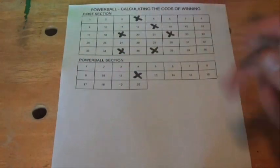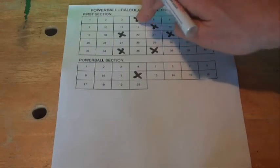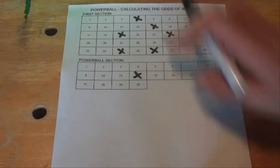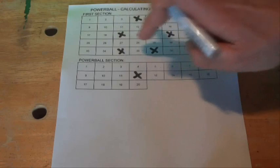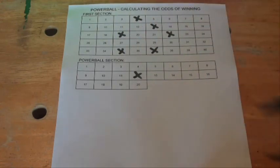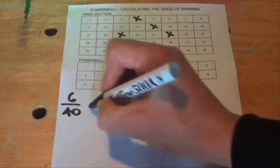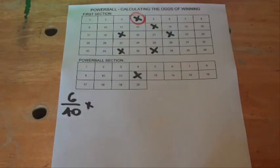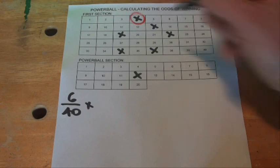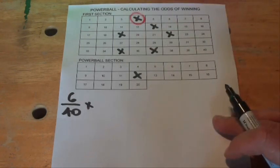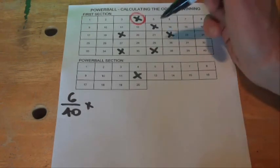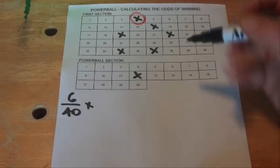So if we look at this first section, the six numbers out of 40, when the first number drops down, we've got one, two, three, four, five, six chances - six chances out of 40 that when that first number drops down, it's going to be on our grid, one of the numbers that we've selected. And when the second ball drops down...